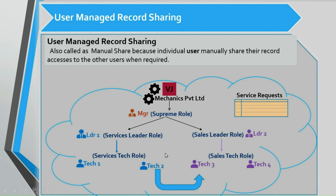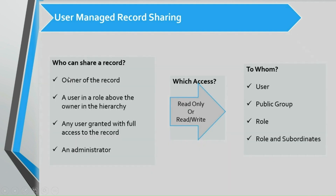For example, if he wants to share one record to a particular role — the sales tech role — he can manually go to that record and share it to that role. Not all users can share a record. Only the owner of the record, a user in a role above the owner in the hierarchy, any user granted full access to the record, and an administrator can perform record sharing.